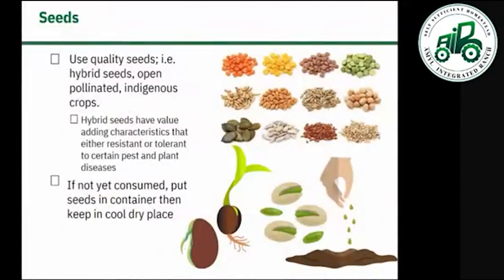For seeds, use quality seeds such as hybrid seeds, open-pollinated varieties (OPV), and indigenous crops. Hybrid seeds have value-adding characteristics — they are either resistant or tolerant to certain pests and plant diseases. For excess seeds not yet consumed, store them in a container and keep in a cool, dry place.